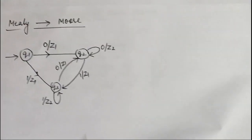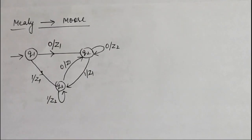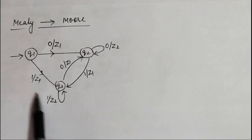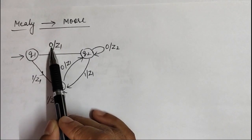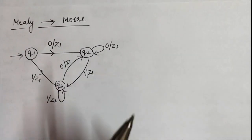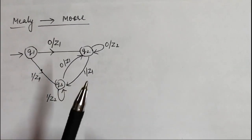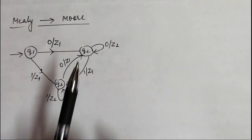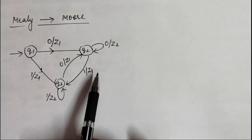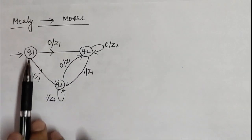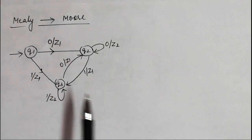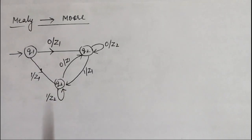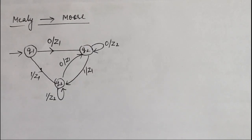The third step is that we continue this process for each next state one by one. Let us consider one example. This is a finite automata and this is a Mealy machine — why? Because here Z1 and Z2 are outputs which are associated with the transition, not with the state. That is why this is a Mealy machine. So we have to convert this Mealy machine into a Moore machine, moving the outputs Z1 and Z2 from the transitions to the particular states. This question appears in the university exam of 2017-18 and is very important.